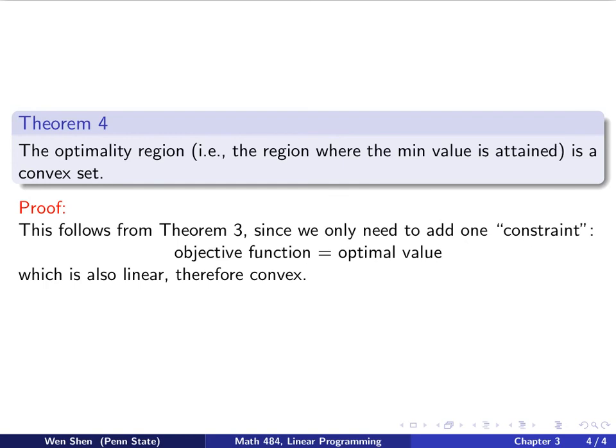Now, with the theorem 3 and the proposition 2, the proof for this one is actually very simple. We just invoke the previous result. So this follows from theorem 3. Since what is the difference between the optimality region and the set S? Well, the only difference is we added one kind of a constraint or equation that is the objective function equal to the optimal value. This is an equal sign, and this is also a linear equation. And we have shown that such an equation is convex, and then we intersect with one more convex set in it, and the result is still a convex set by proposition 2.